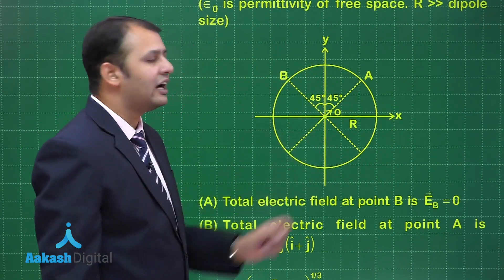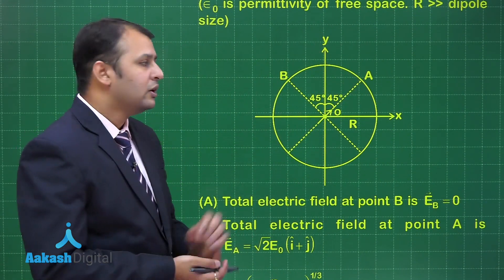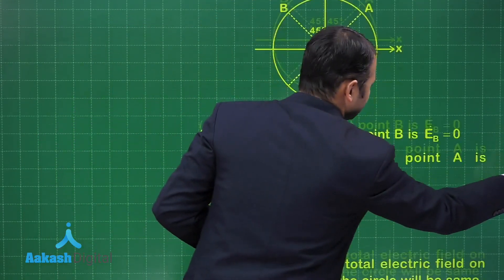The dipole is directed at this line that is 45 degrees with x and y axis. Now what are the statements?